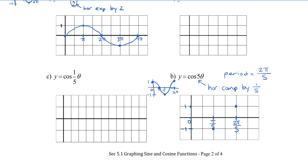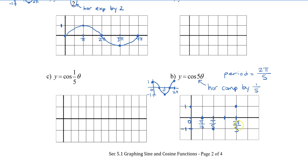Halfway between 0 and 2pi over 5 is pi over 5, where we plot the minimum at negative 1. The middle point on the x-axis is halfway between the max and min: halfway between 0 and pi over 5 is pi over 10. Skip-counting gives us the fourth point at 3pi over 10, halfway between pi over 5 and 2pi over 5. Draw a smooth curve through all these points — not a V shape.